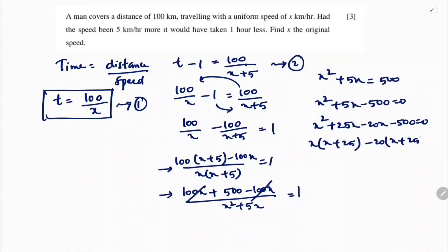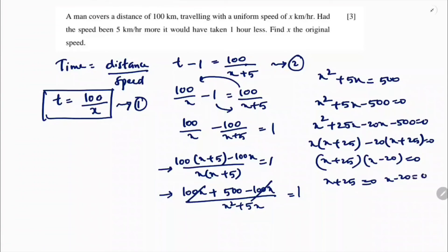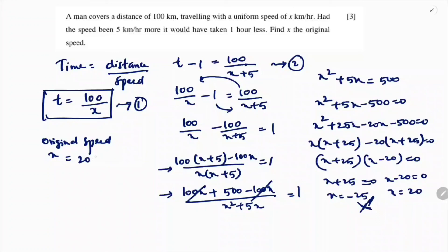Factoring the quadratic: (x + 25)(x - 20) equals 0. So x equals minus 25 or x equals 20. Since speed cannot be negative, we reject x equals minus 25. Therefore, the original speed x equals 20 kilometers per hour.